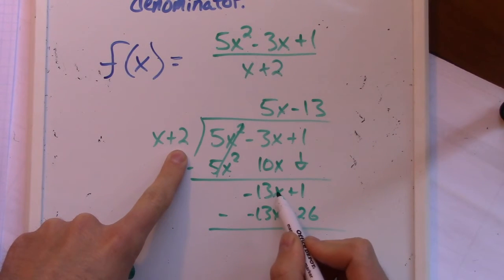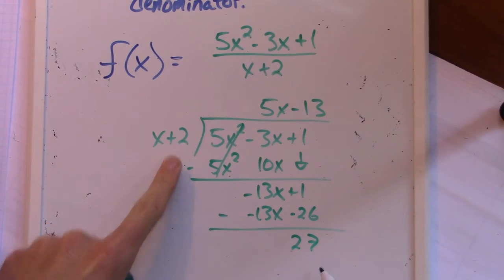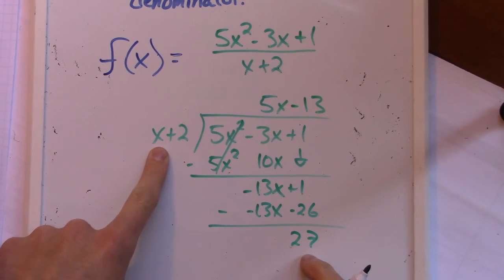So then these, negative 13x minus negative 13x, those are gonna cancel. It's gonna be 0. And then 1 minus a negative, that's gonna be 27. Alright? So then I'd be looking at 27. What can I multiply times to get 27 when I have an x term? Nothing.